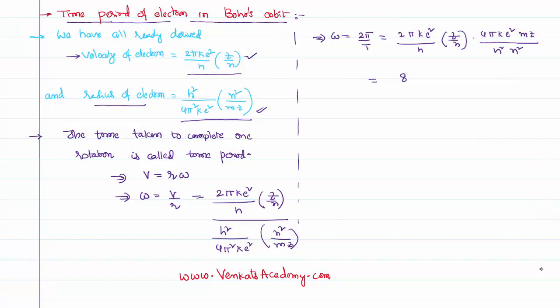There is a π here, π here, and π here also, so π³. Then k and k gives k², e² and e² gives e⁴, h and h² gives h³. Then we have m, z and z is z², and n and n² equals n³.